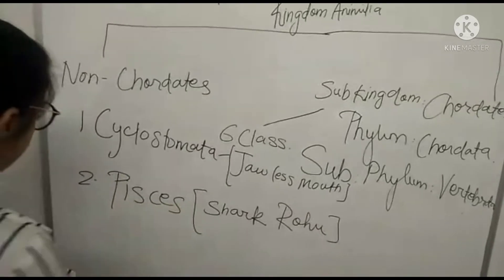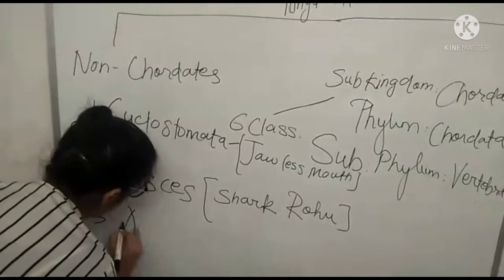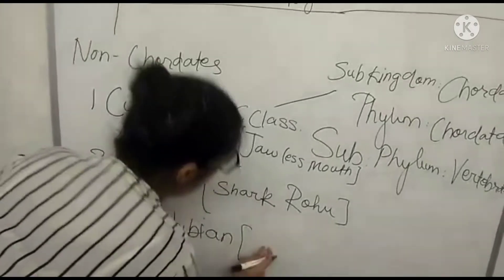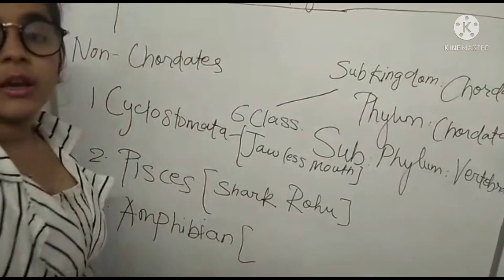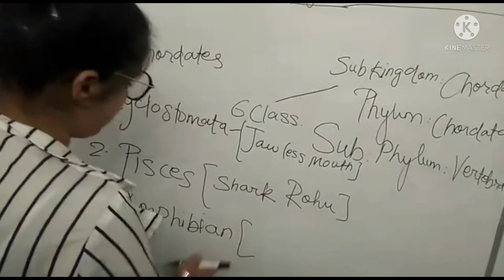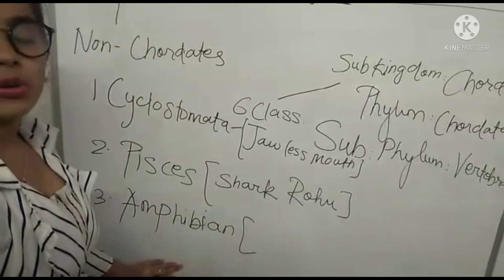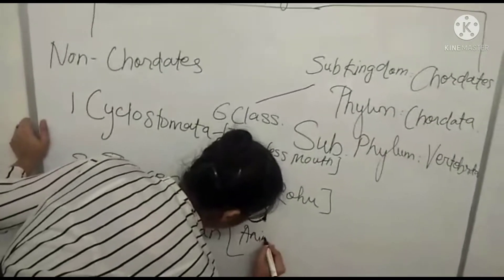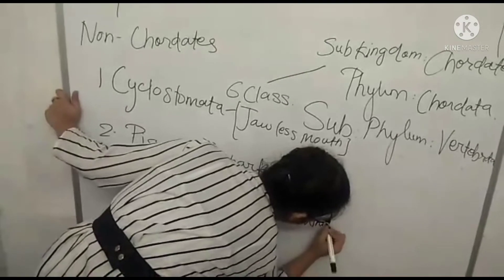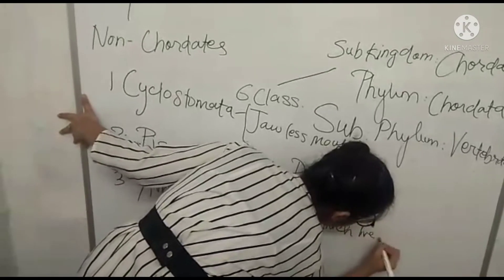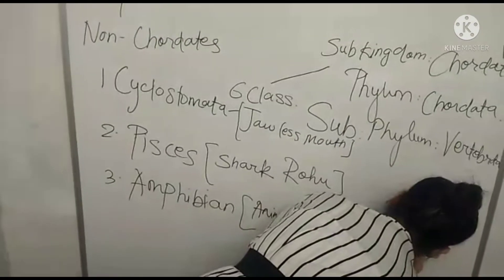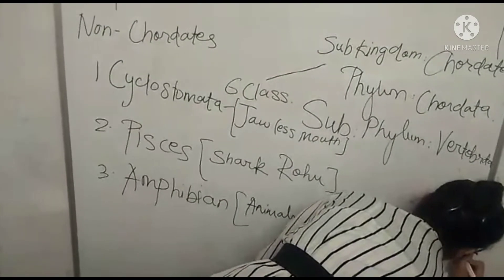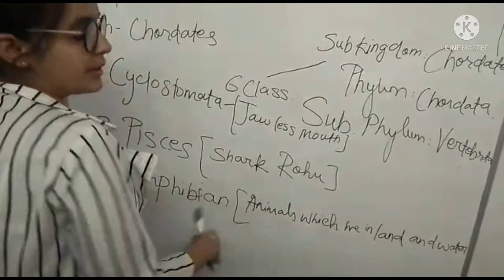Our third one is Amphibia. Amphibia are the animals which live both on ground and in water too. And crocodile here is not the example because crocodile cannot respire in water. The example is frog — frog can live on both land and water.